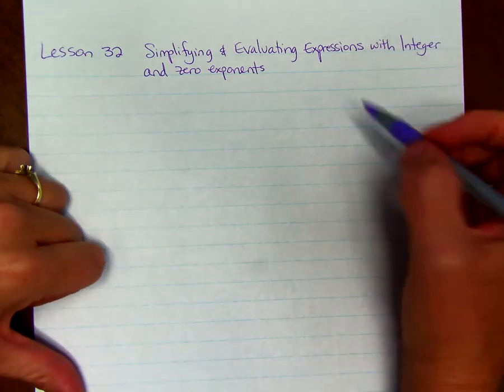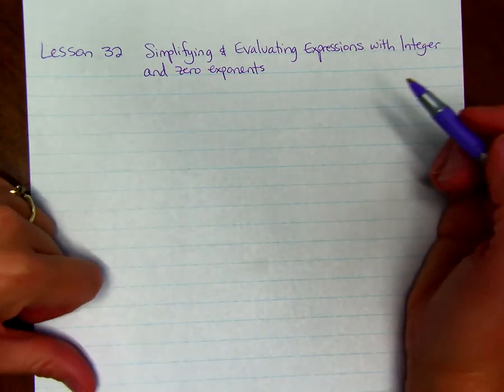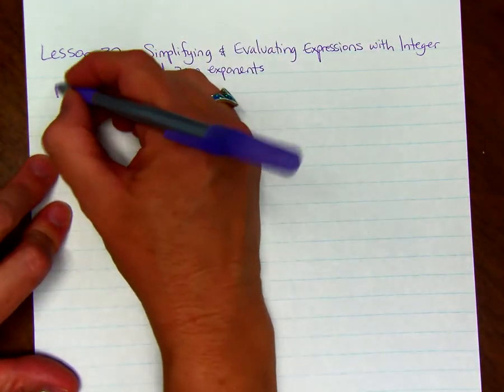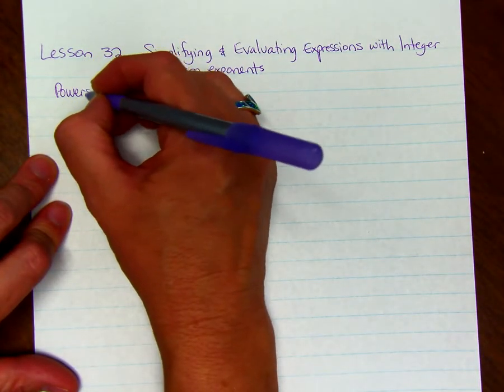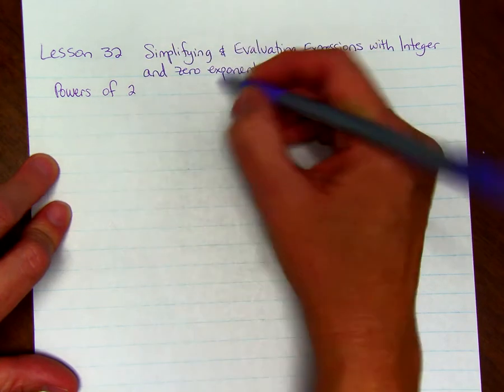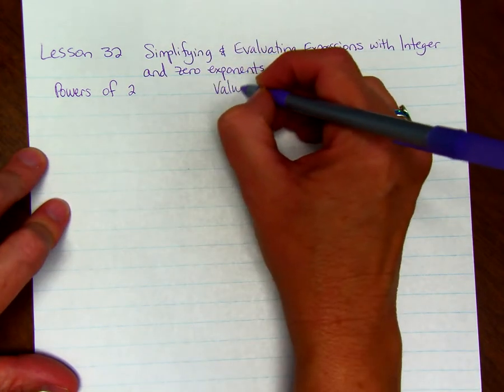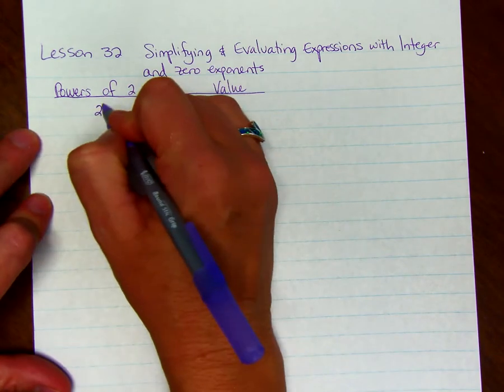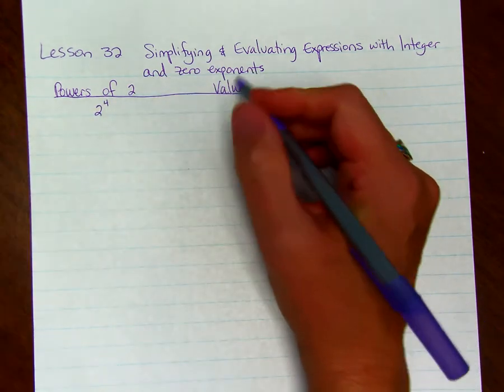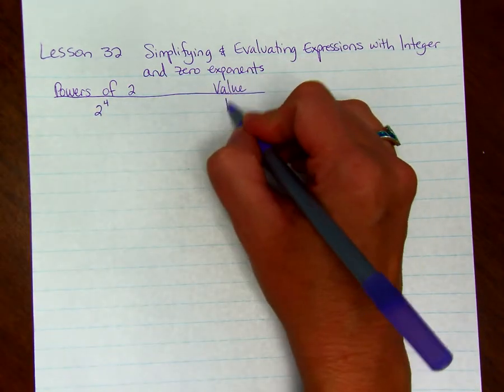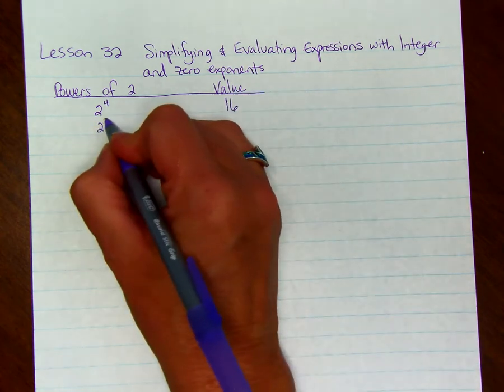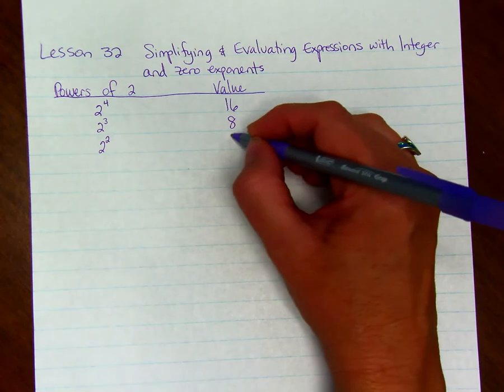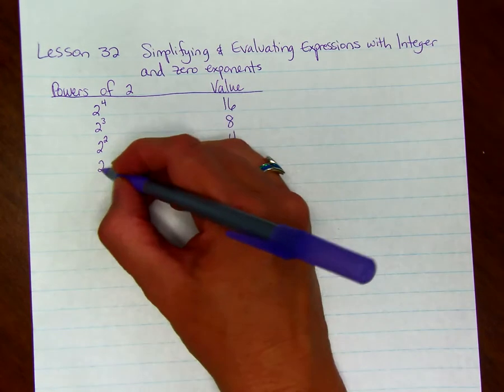Exponents can be positive, negative, or they can be zero. So here's some examples of powers of 2 and then what the value is with those powers. If we take 2 to the 4th power, that's 2 times 2 times 2 times 2, which is 16. 2 cubed is 8, 2 squared is 4, 2 to the 1st.